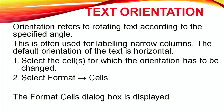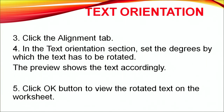As the heading suggests, orientation means rotating the text according to a specified angle. This is often used for labeling narrow columns. The default orientation of the text is horizontal, but we can change it as per our requirement. Select the cell or cell range, then select Format from the menu bar and click on Cells. In the Format dialog box, click the Alignment tab, set the degrees of rotation, preview the result, and click OK.